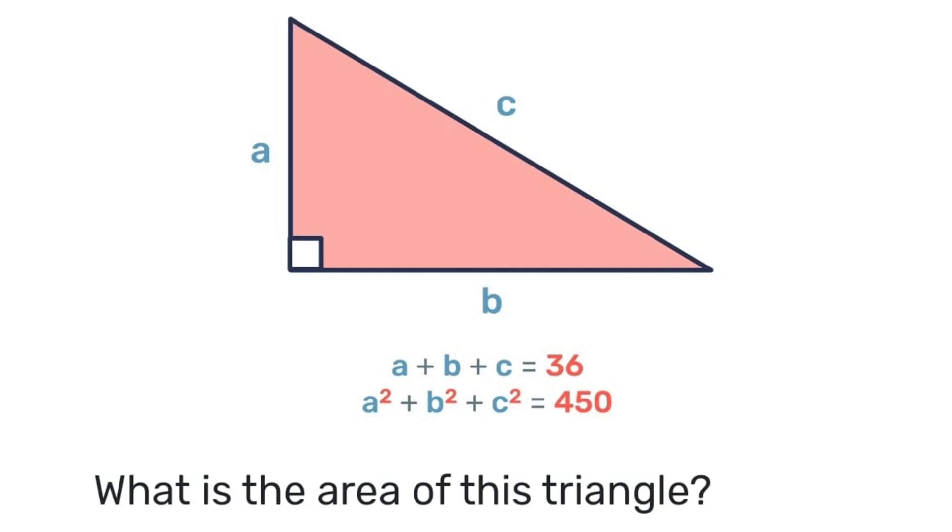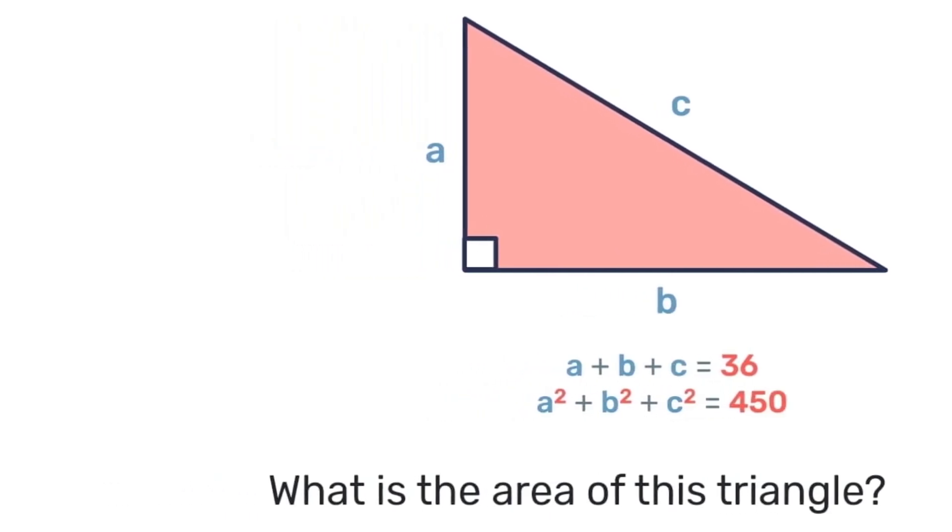Pause the video here, see what you come up with. I'm gonna solve it this way. So first off, we're dealing with the Pythagorean theorem: a squared plus b squared equals c squared.